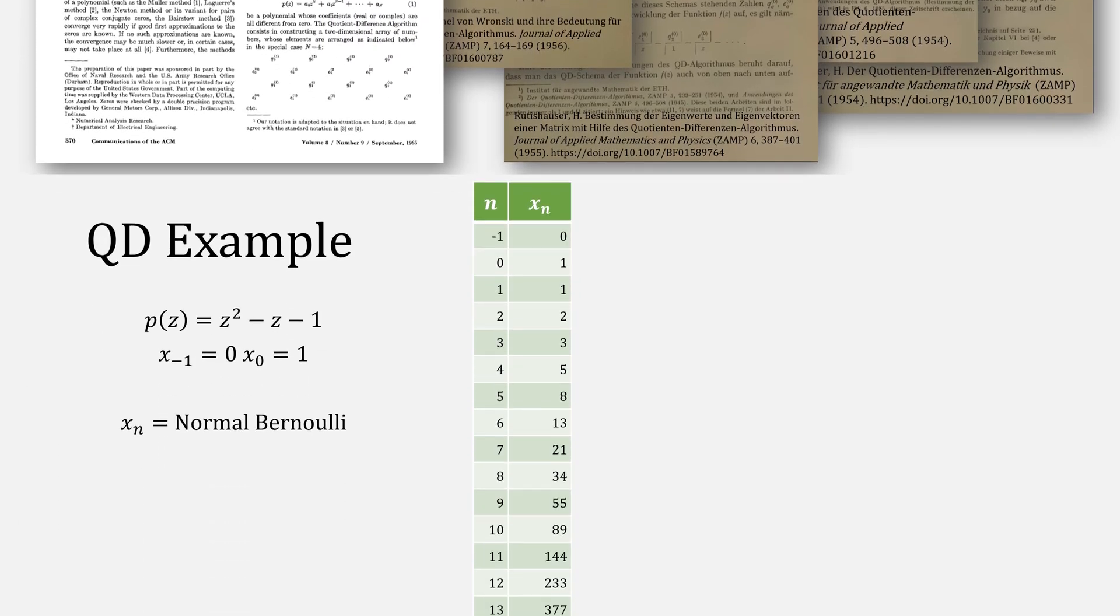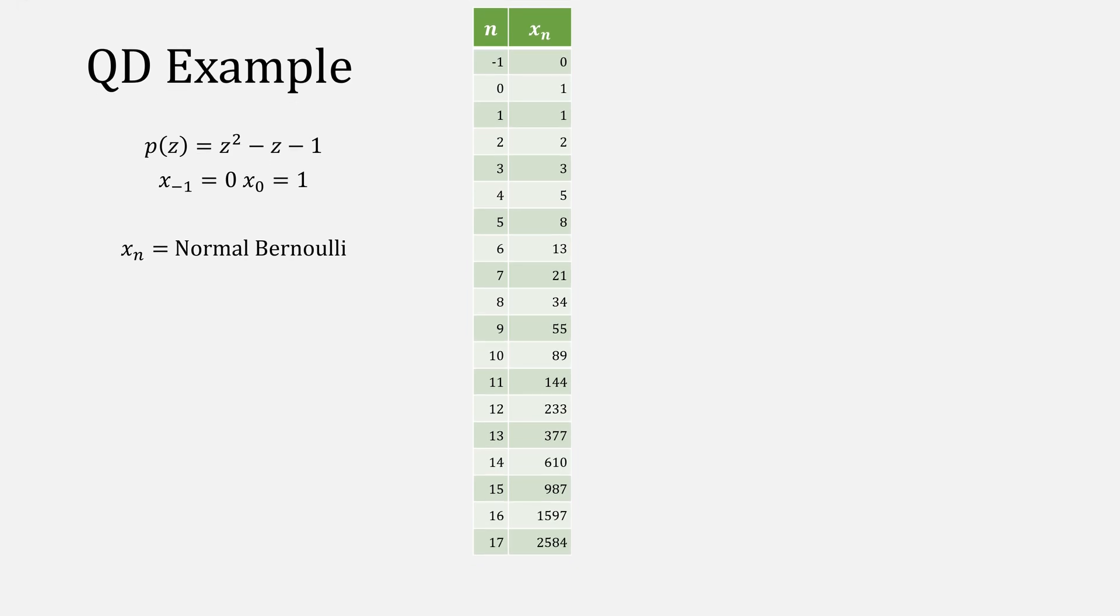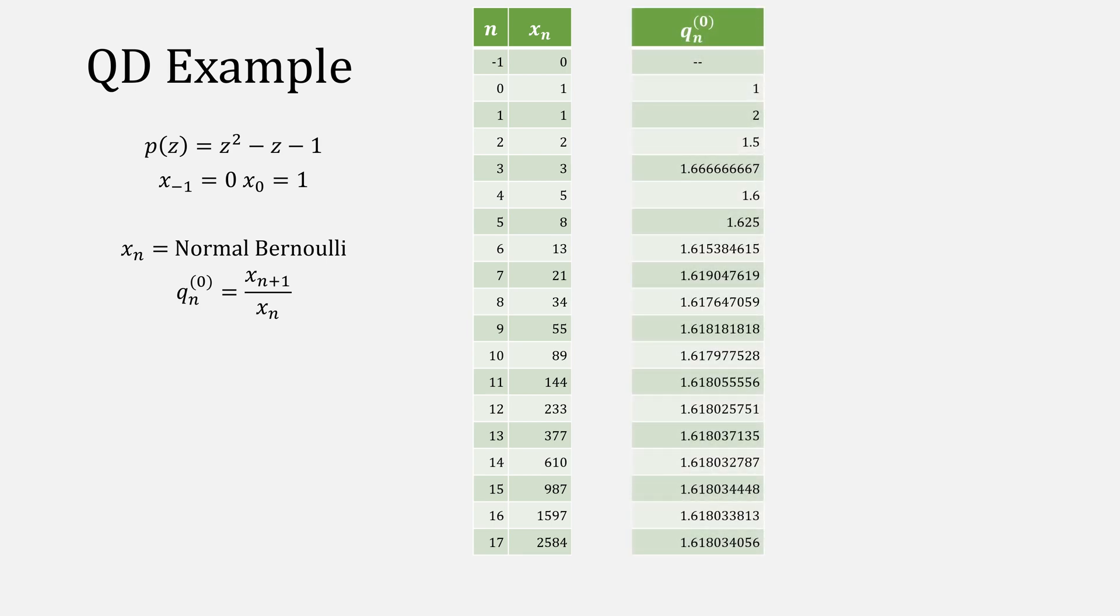The way it works is you take normal Bernoulli's method, and instead of computing just q, it's now a column of q. There's another variable that we're going to add, which is a column of e that starts as all zeros.